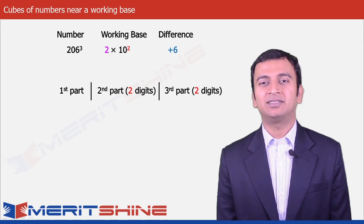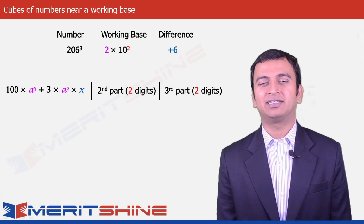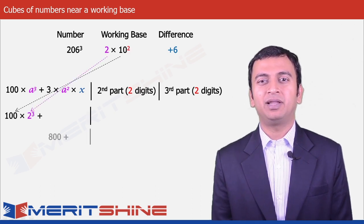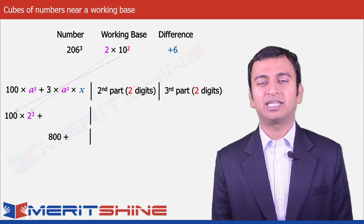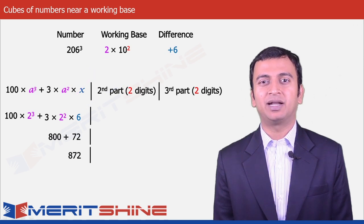The first part would be 100a³ plus 3a²x, which gives us 100 times 2³ = 800, plus 3 times 2² times 6 = 72, making it 872 in the first part.